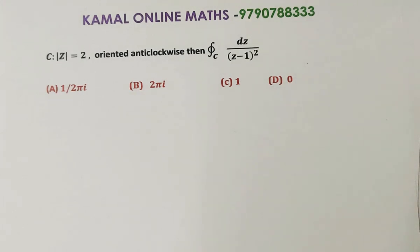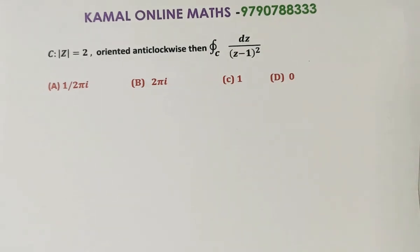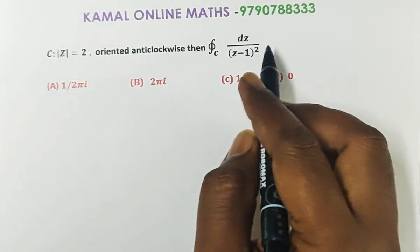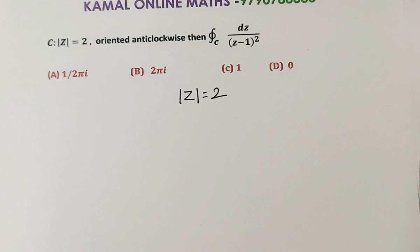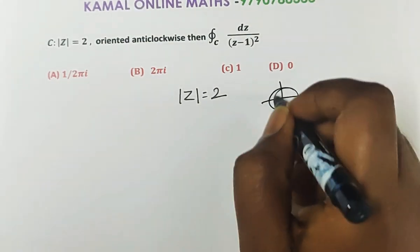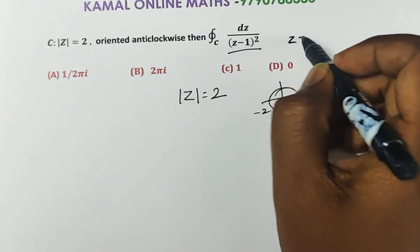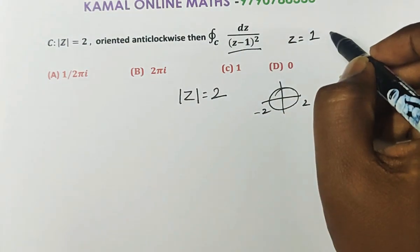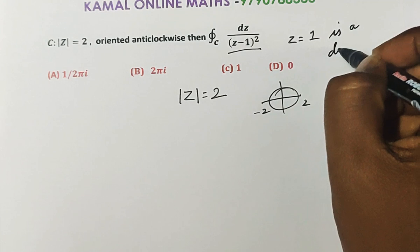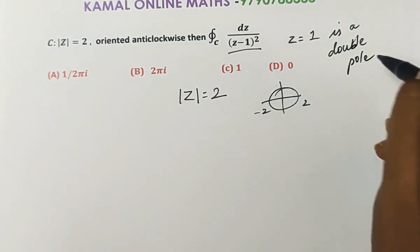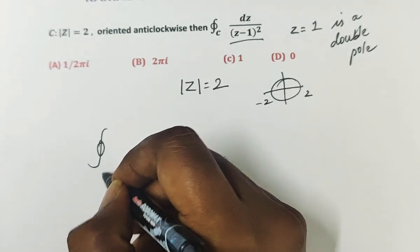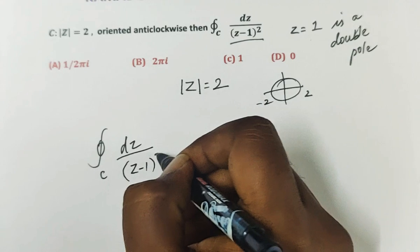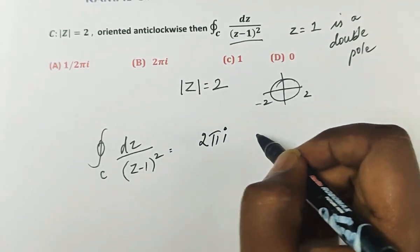Next question: let C be the circle |z| = 2 oriented anticlockwise. Find the contour integral over C of dz / (z − 1)². The function is 1/(z − 1)². C is a circle with center 0 and radius 2 units. The singularity is at z = 1, which is a pole of order 2 (double pole), and z = 1 lies inside |z| = 2.